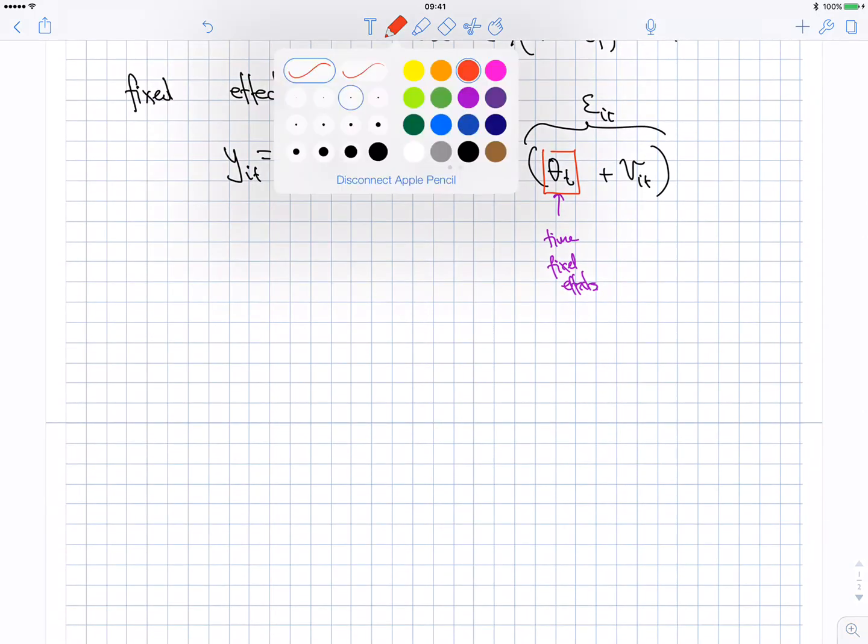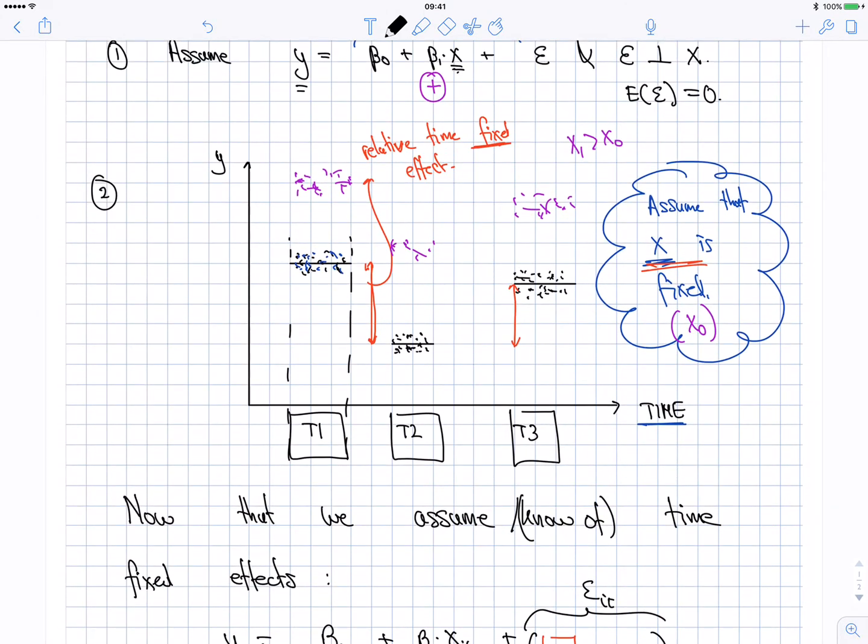Now, the question is, how do we estimate time-fixed effects? Of course, using our data. Imagine that you didn't have this, because if I were to give you this, then you'd be able to estimate it very easily. You just measure this distance here, and you'd say this is the time-fixed effect when I go from period t1 to t2, this is when I go from period t2 to t1, etc. But imagine I don't give you this, but I only give you data. How do you go about estimating this?